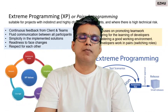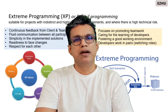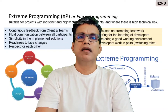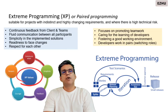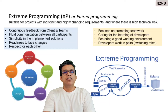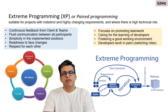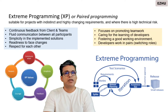Scrum framework may not be suitable for projects where the customer requirements keep changing, the volatility is very high with respect to the needs of the customer, and there is a huge technical risk. In such scenarios, the Extreme Programming framework is more suitable. Extreme Programming values include continuous feedback from clients and across all teams, simplicity of the solutions being implemented, readiness and courage to address any changes, and respect for each other. These are the core Extreme Programming values.